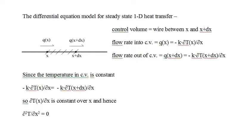Knowing the physics, we are ready to derive the differential equation model for 1D steady-state heat transfer. Steady state means that temperature is not changing with time, and hence the heat flow rate is also not changing with time, so both temperature and flow rate are functions of x only. We will consider the heat flow rate into a small section — the control volume shown in the diagram as the section between x and x plus dx. A positive flow rate q at the left end at x represents heat flowing into the control volume, and a positive flow rate at the right end at x plus dx represents heat flowing out.